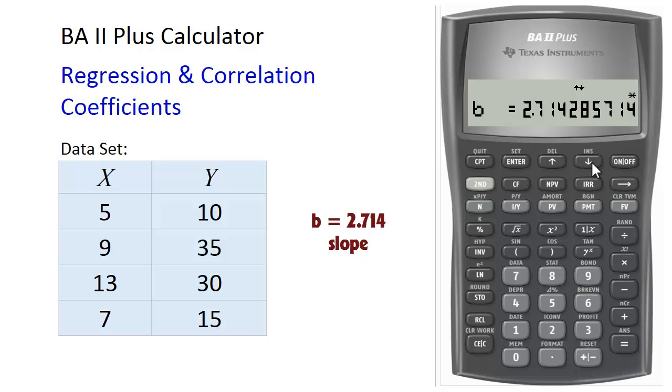B is the slope, 2.714, which is the amount of change in Y per unit increase in X. So if X increases by 1, Y will increase, on average, by 2.714. Scroll down.